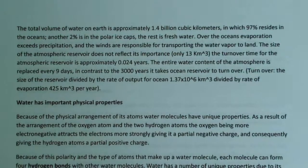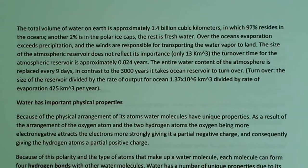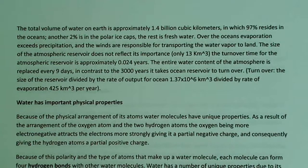The total volume of water on Earth is approximately 1.4 billion cubic kilometers, of which 97% resides in the ocean and another 2% is in the polar ice caps — the rest is fresh water. Over the oceans, evaporation exceeds precipitation, which makes sense given the large surface area of water. This leads to greater evaporation over oceans compared to more terrestrial environments.